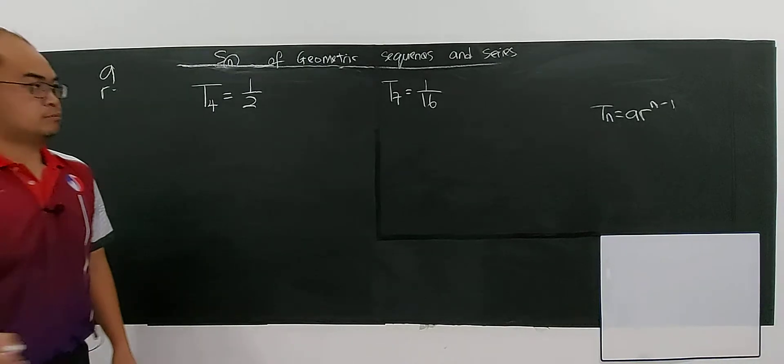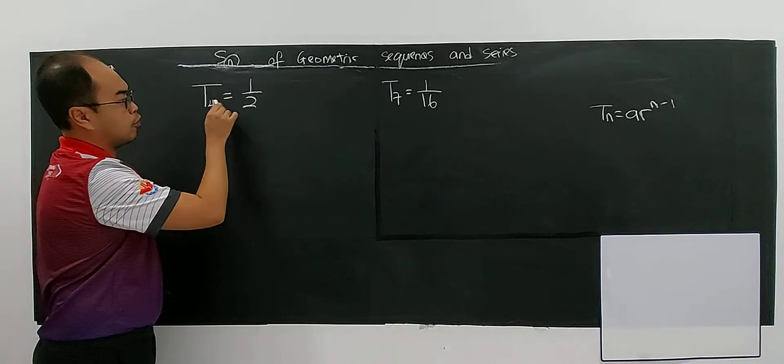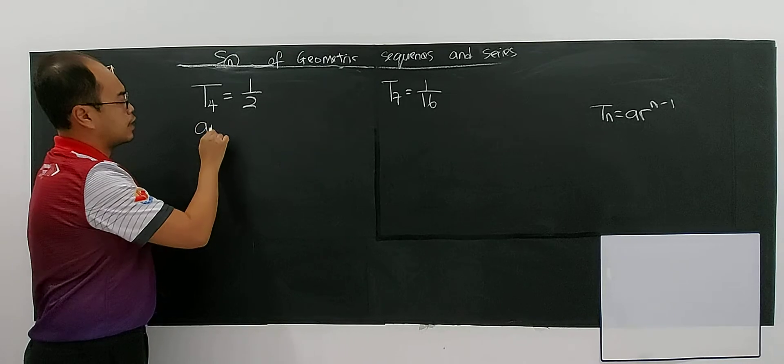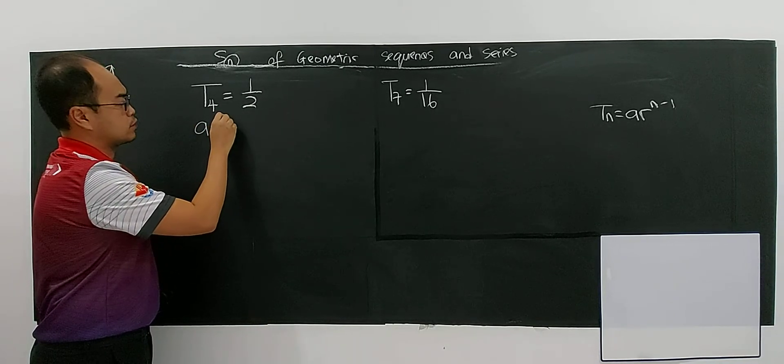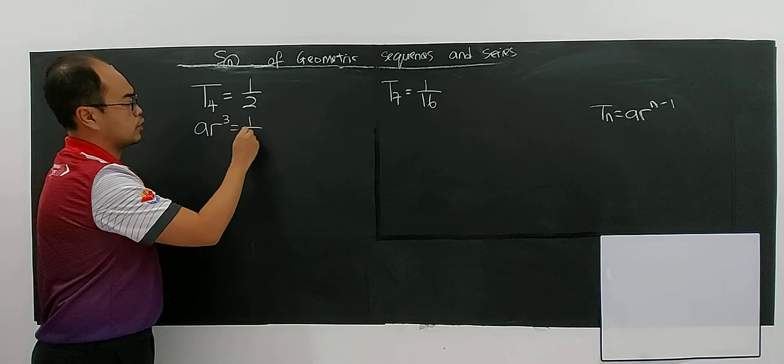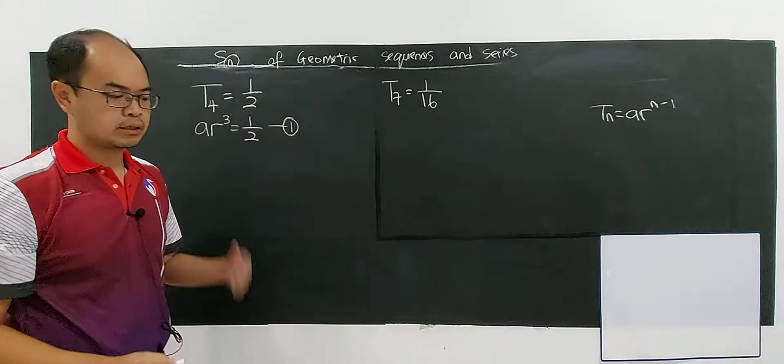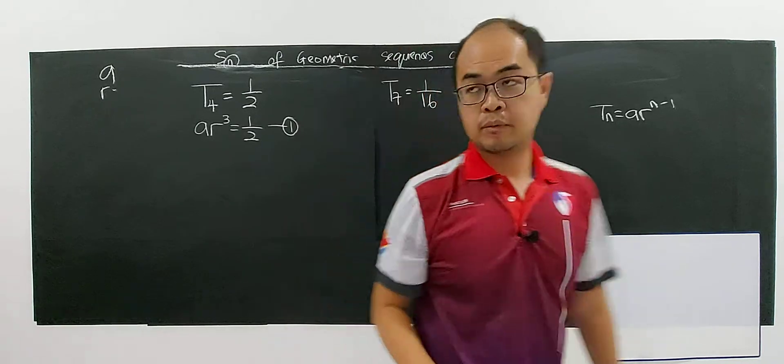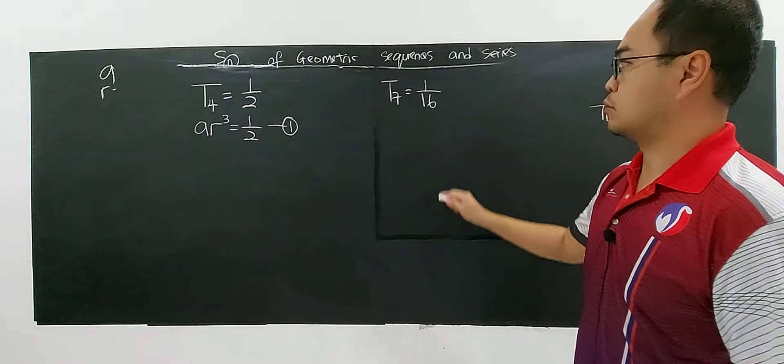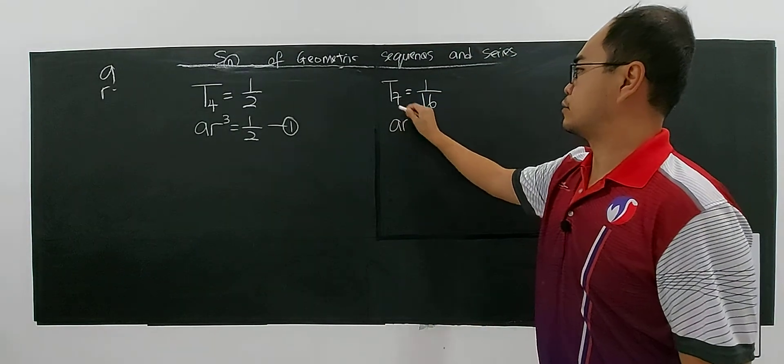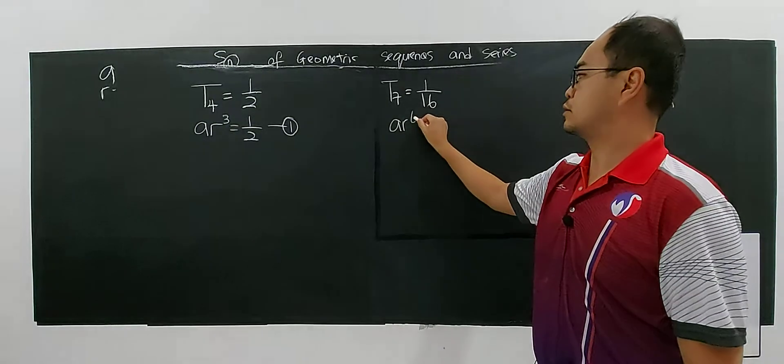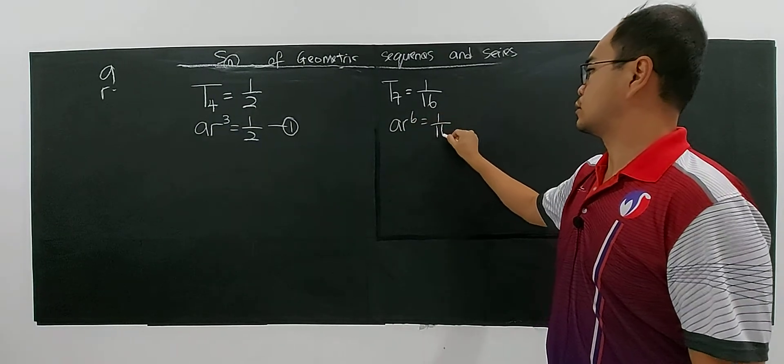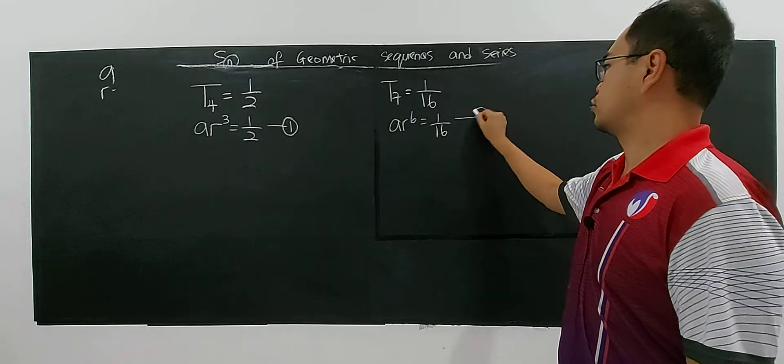Okay, so now, then you have T4. T4 is A times R to the power of 4 minus 1, 4N minus 1. So you have power of 3. It goes to 1 over 2. I make this one to be equation 1. I repeat again here. So this method is very important. So here will be A, R, 7 minus 1, you have 6 equals to 1 over 16. So I make this to be equation 2.